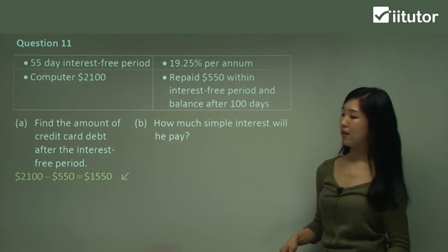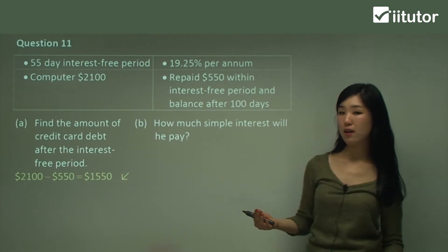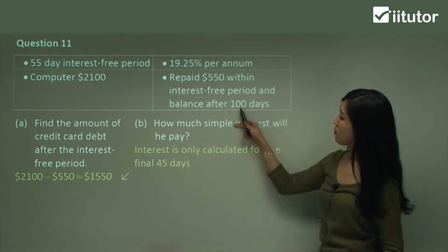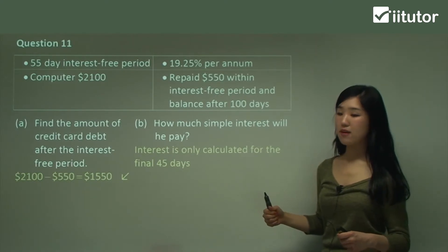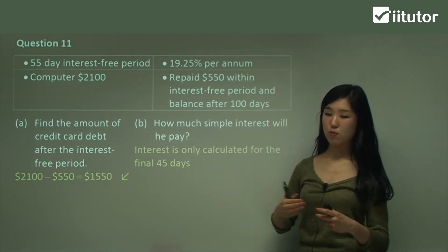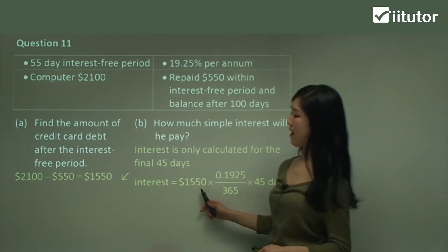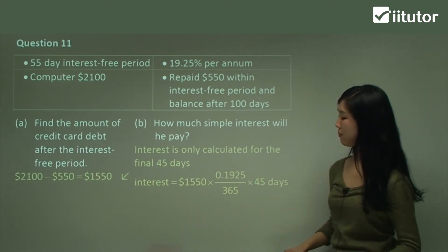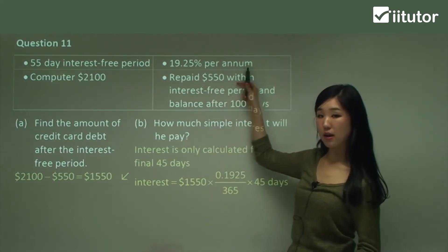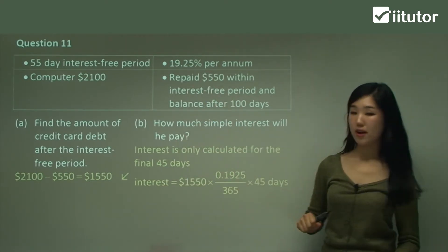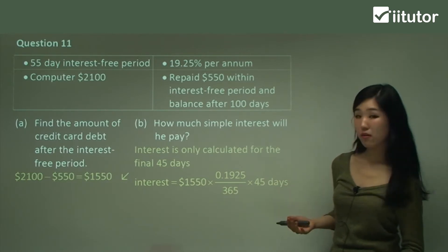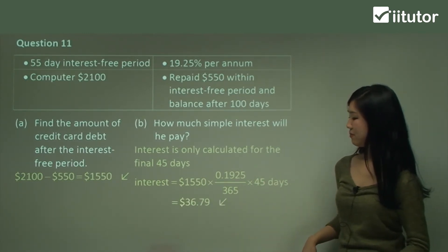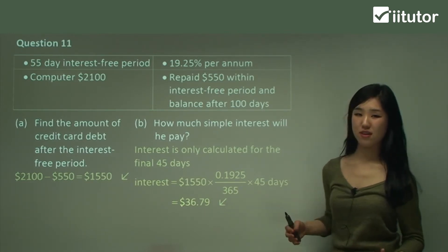How much simple interest will he pay? We're going to use our simple interest formula again. Interest is only calculated for the final 45 days, because between 55 and 100 days there's a 45-day difference — he paid after 100 days so we're charging interest for 45 days. So interest equals the principal of $1,550 times the rate of 19.25%, but since we're calculating in days, divide that by 365 to find the daily rate, then multiply by 45 days. Put that in your calculator — it should be $36.79. It's very similar to the example, so I hope that makes sense.